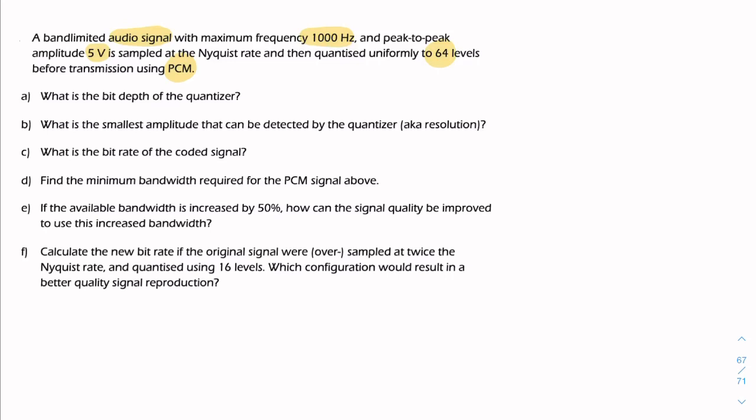So the first question is straightforward: what's the bit depth of the quantizer? How many bits do we need to encode 64 levels? That's simply the logarithm to the base 2 of the number of levels. So 6 bits, that's easy.